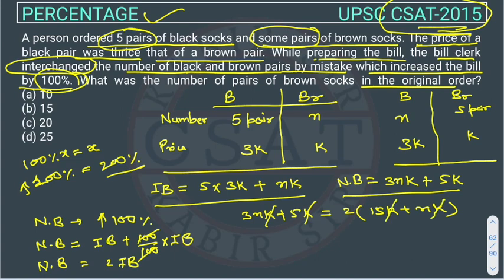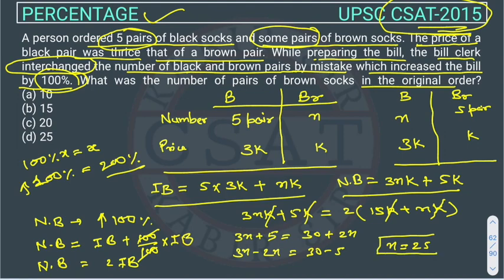After cancelling k, we get: 3n + 5 = 30 + 2n. Bringing 2n to the left and 5 to the right: 3n − 2n = 30 − 5, so n = 25. The number of pairs of brown socks is 25.